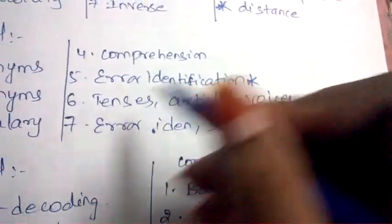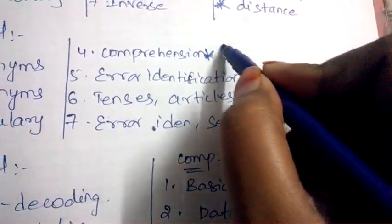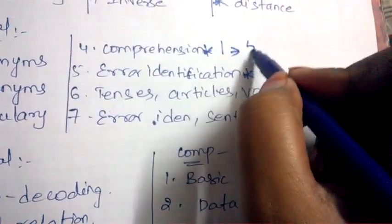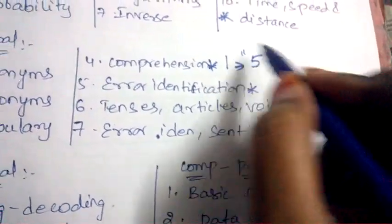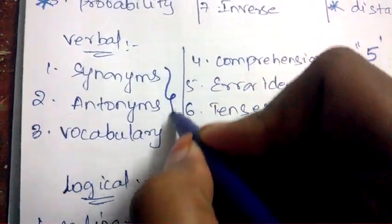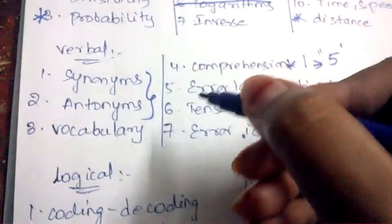And reading comprehension is very important because from one passage, like one reading comprehension, five questions will be asked so it is very important. And coming to synonyms and antonyms it completely depends upon your luck. Like if you are really lucky enough you will get very easy antonym or synonym.